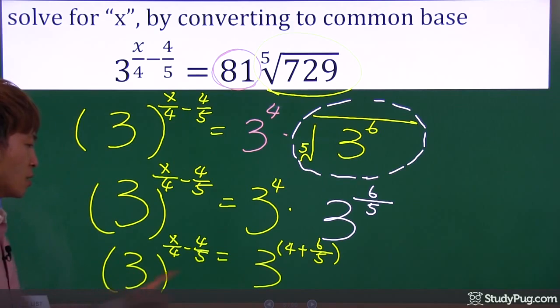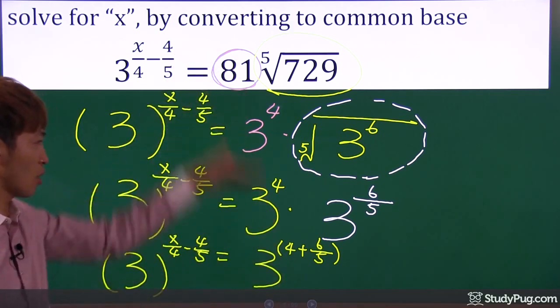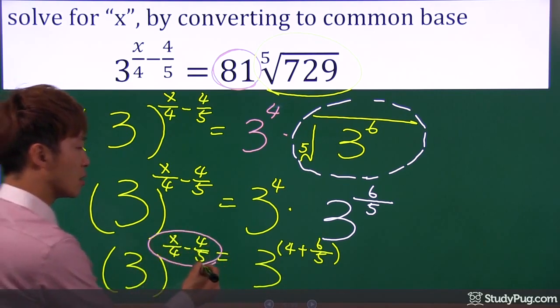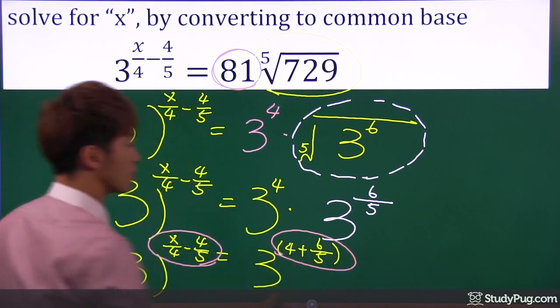So going from here to here, we are just applying the multiplication law. Now, base of three, base of three. This is what we're trying to achieve all the way along. And now we are here: base of three, base of three. So for the equality to hold, exponent must equal exponent.